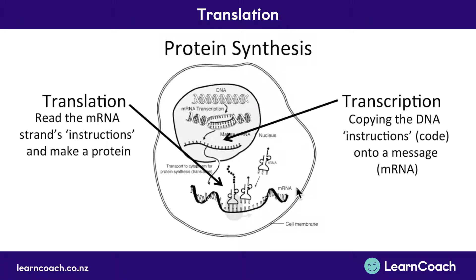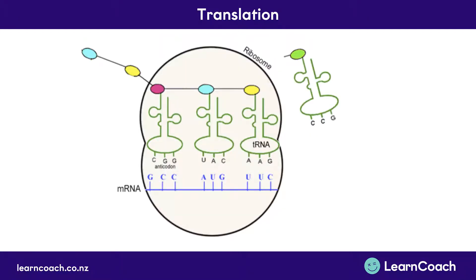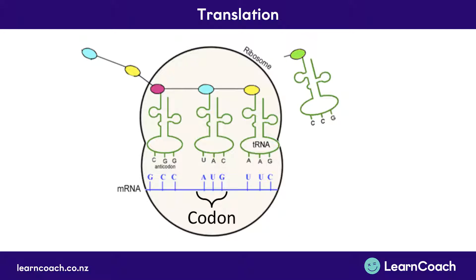So how is the protein made? I hope you're getting familiar with your base pairs because we're going to use those a lot. We have our mRNA strand down the bottom here and you'll notice that the base pairs go across — GCC, AUG, UUC — and they're split up into groups of three. These groups of three are called codons, and the body reads this mRNA message in groups of three as codons.